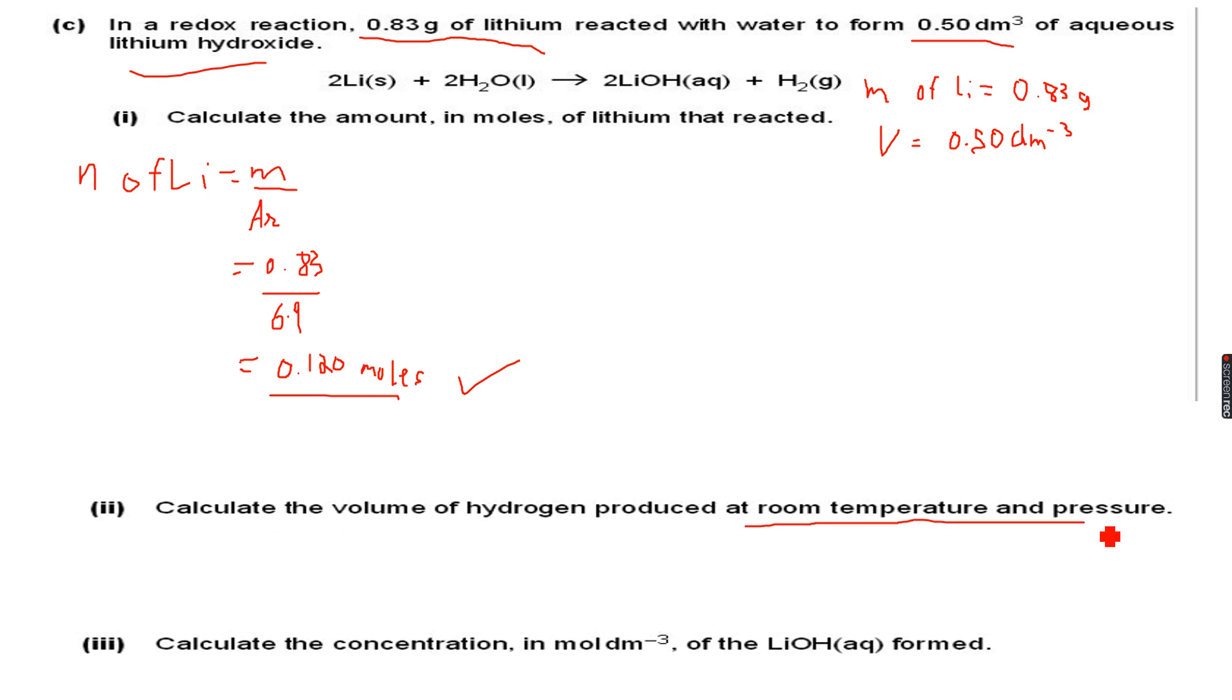Now the second part asks us to calculate the volume of hydrogen produced at room temperature and pressure. First, let's see this equation: 2Li(s) + 2H₂O(l) → 2LiOH(aq) + H₂(g). The state symbols solid, liquid, aqueous, and gas are given to us.